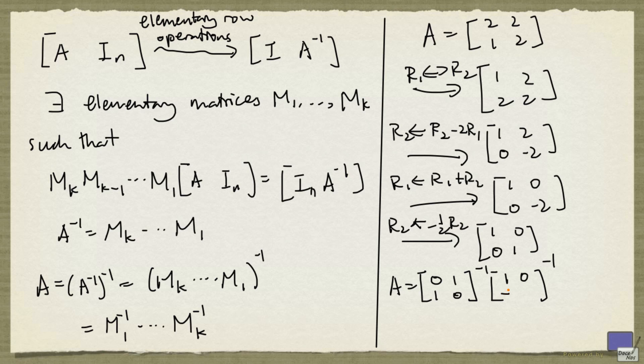And the second matrix is the inverse of the elementary matrix corresponding to this operation here. And that is [1, 0, -2, 1]. And the third operation will give us this matrix. And finally, the last matrix is this.